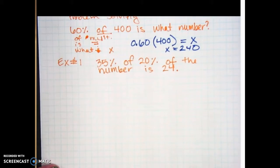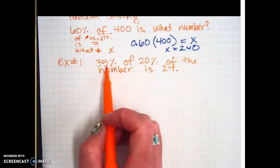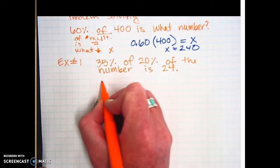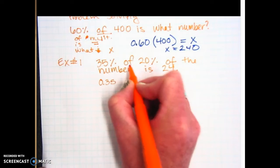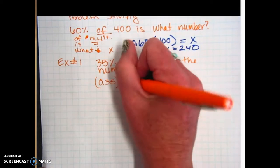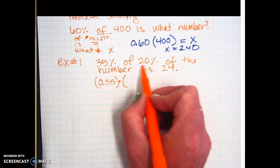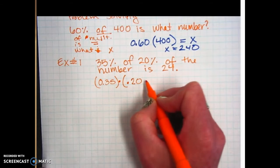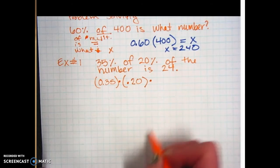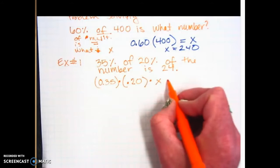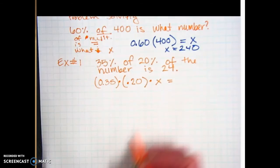So this is a little bit trickier, but we have two percents. But it does say 'of' between them. So we're going to take 35% as a decimal, which is 0.35. 'Of', which means multiply. So you can either use a multiplication dot, or you can use parentheses, or you can do both. Of 20% as a decimal, so 0.20. Of the number, we'll call it X. 'Is', so write your equal sign, 24.